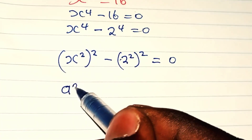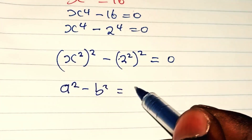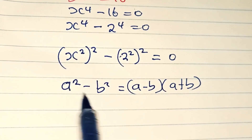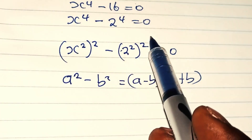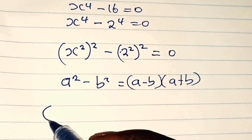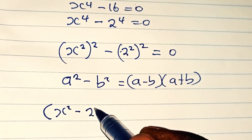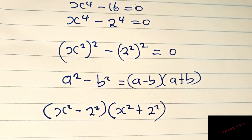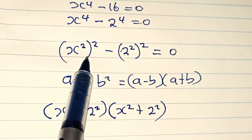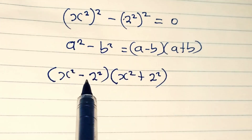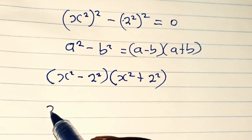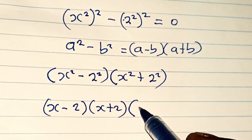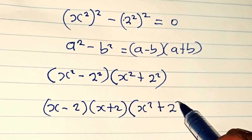Whenever we have a difference of squares, for example, a squared minus b squared is the same thing as (a minus b)(a plus b). So, since that is the case, x squared, squared minus 2 squared, squared is the same thing as (x squared minus 2 squared)(x squared plus 2 squared). From here, x squared minus 2 squared can be written further as (x minus 2)(x plus 2), all multiplied by (x squared plus 2 squared).